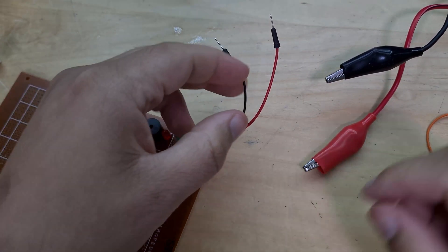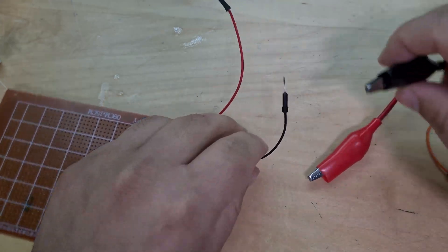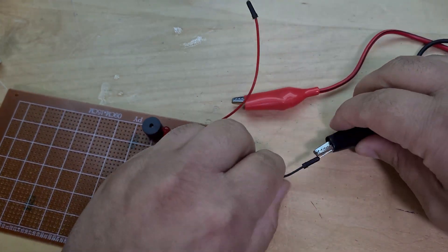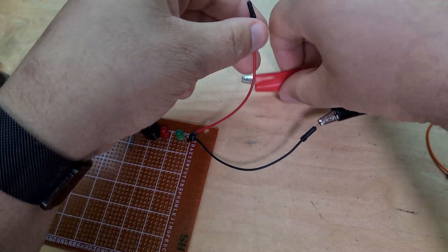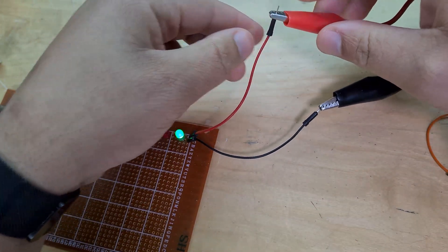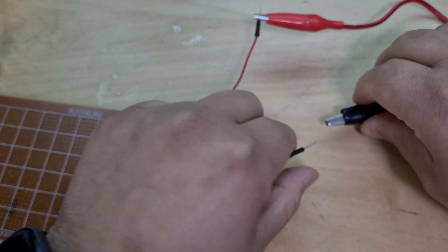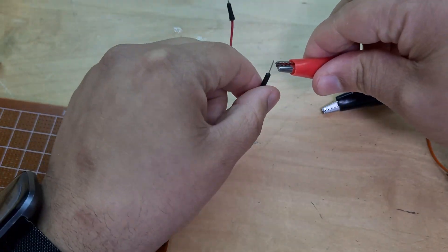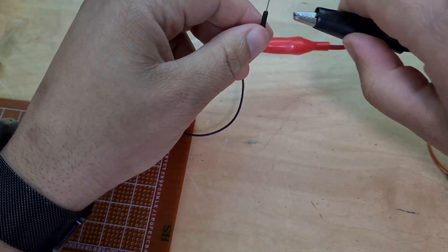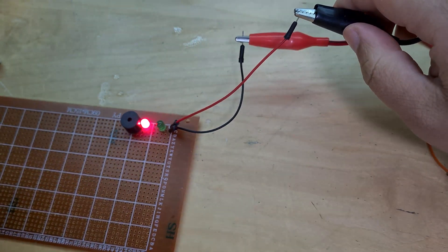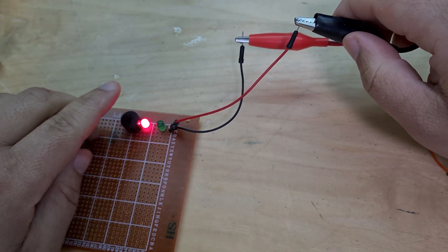Anyways, alright. So let's go negative to negative and positive to positive, and look at that, we've got a green LED. And then switch it around, positive to negative, negative to positive, and we've got a loud buzzer.